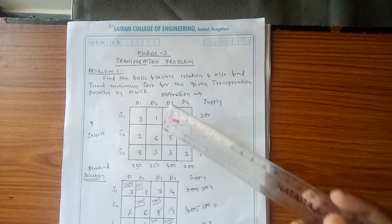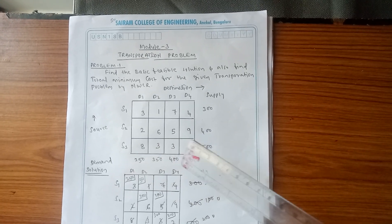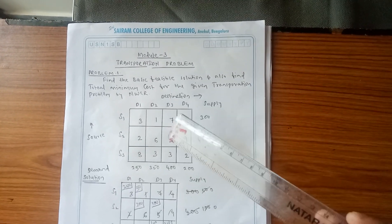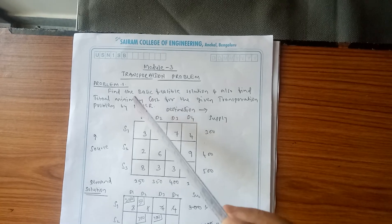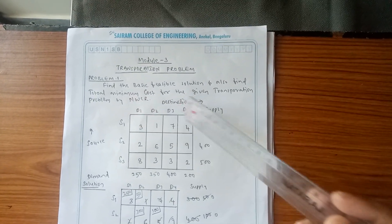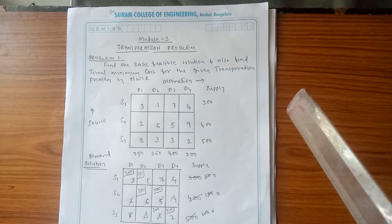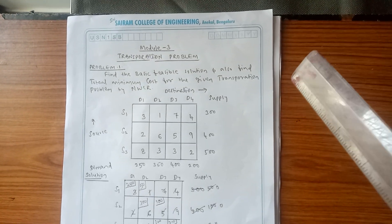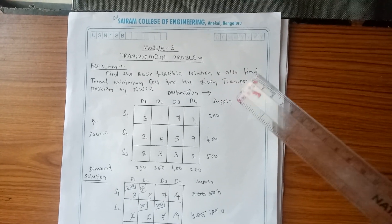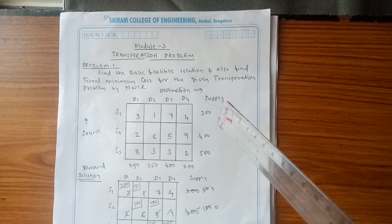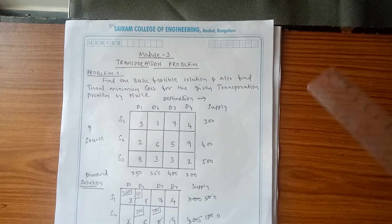To solve this problem we follow three steps. First, check whether the given transportation problem is balanced or unbalanced. That means supply value should equal demand value. If equal, go to the second step. If not equal, add a dummy row or dummy column to make it balanced. The cost from source S1 to destination D1, for example, is 3 rupees, and similarly other costs are given in the tableau.